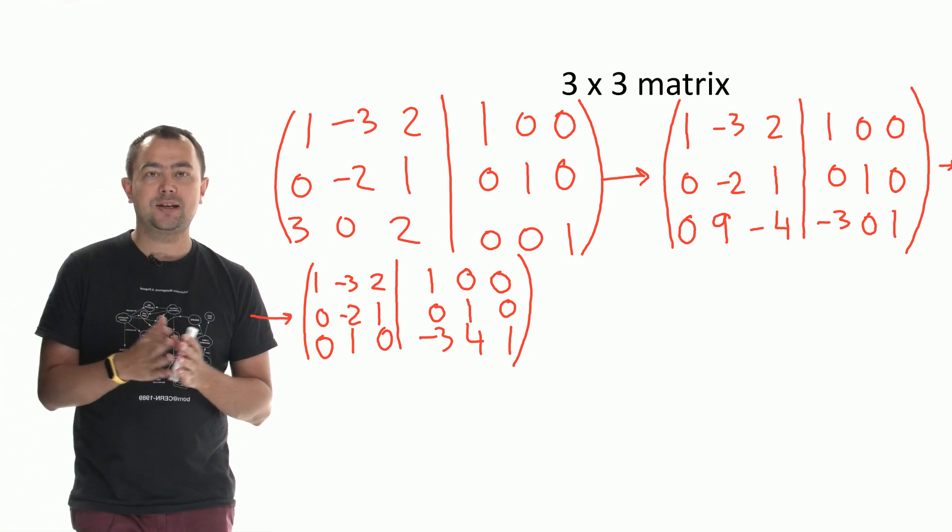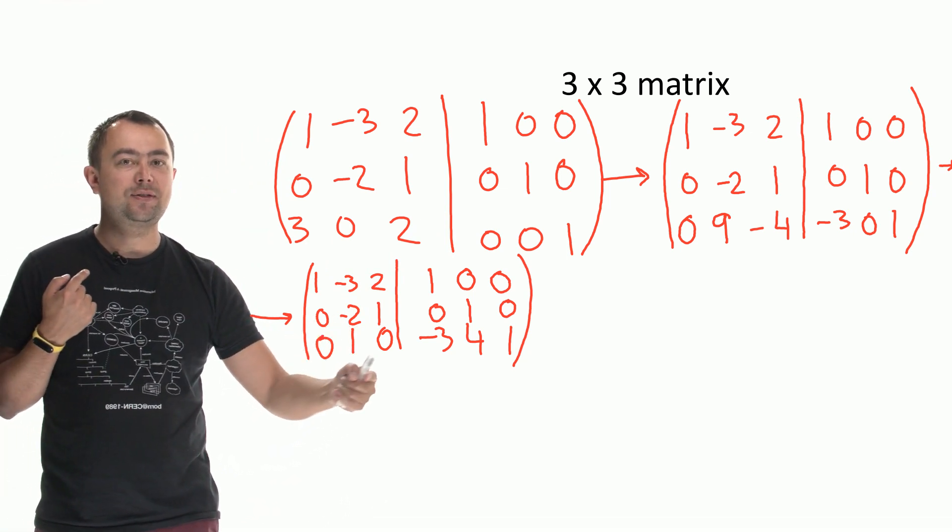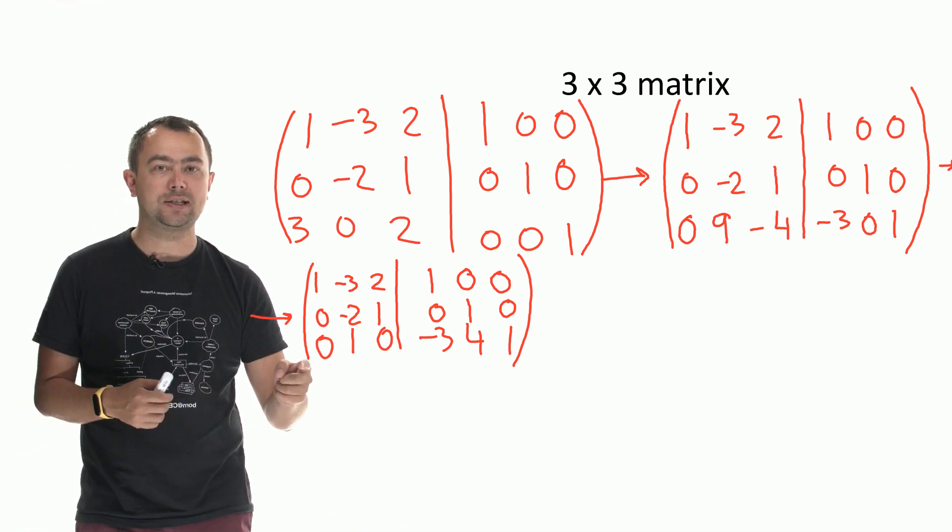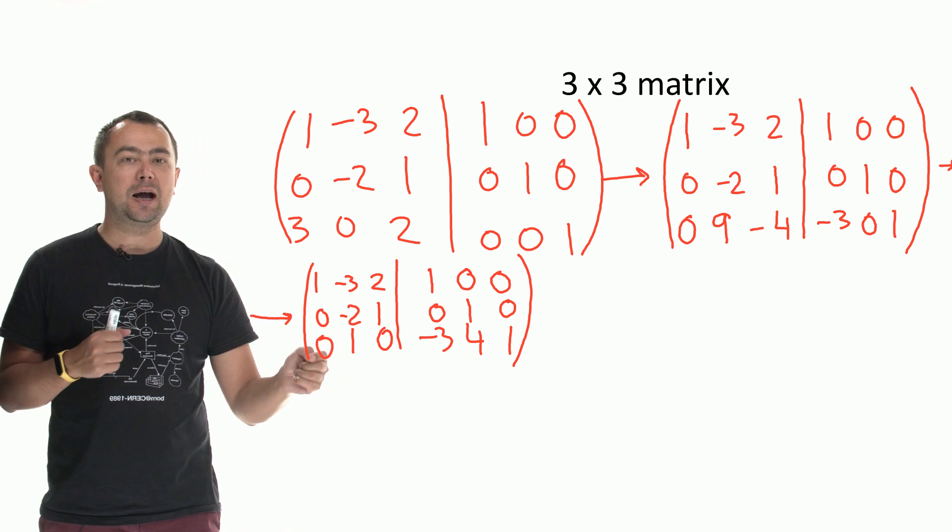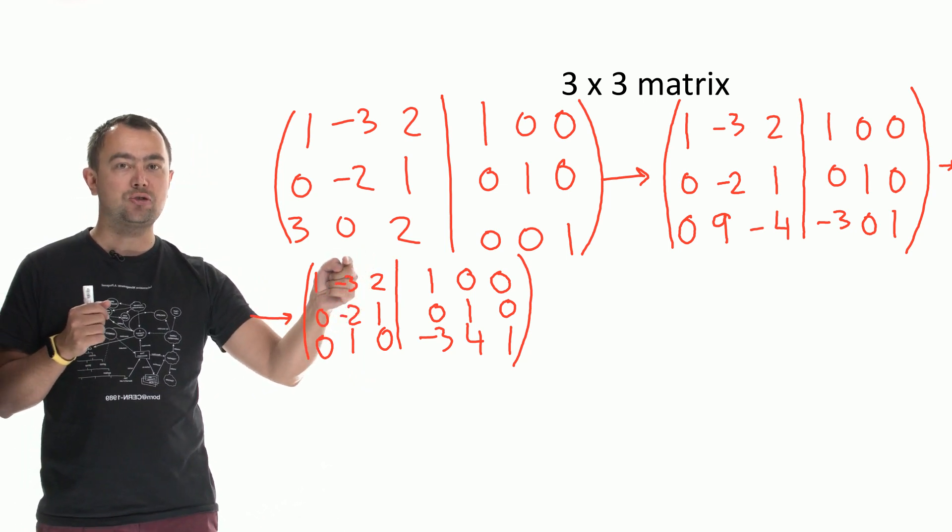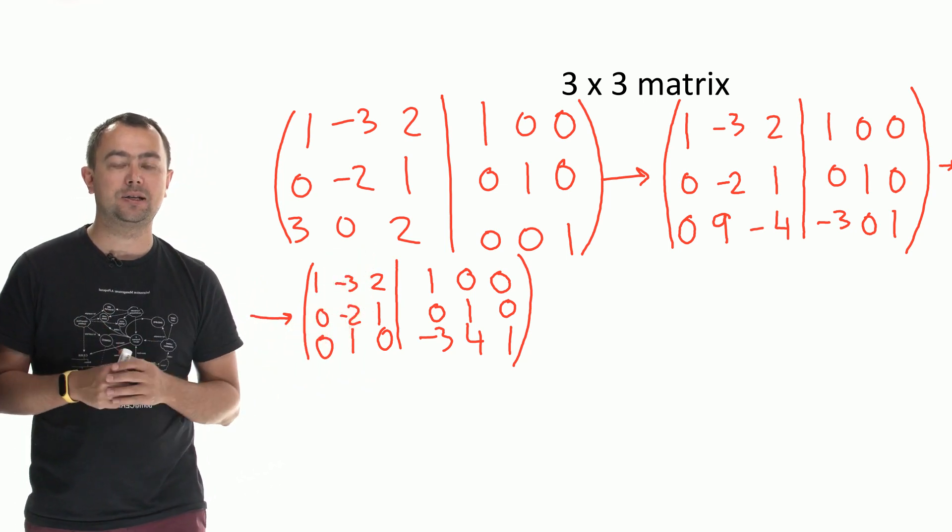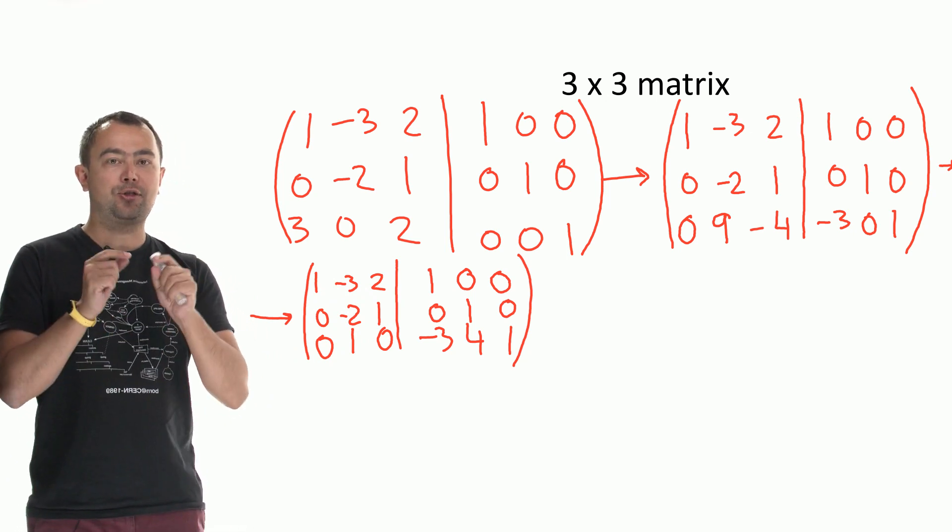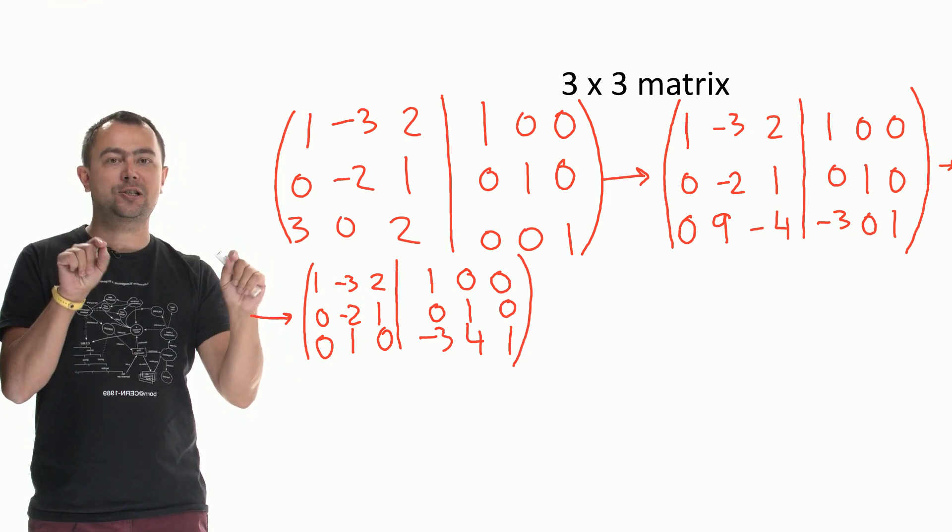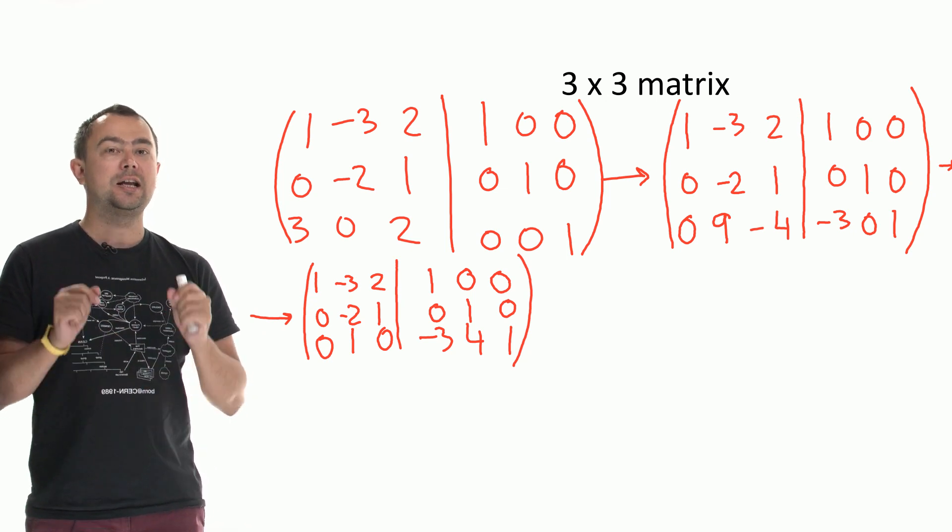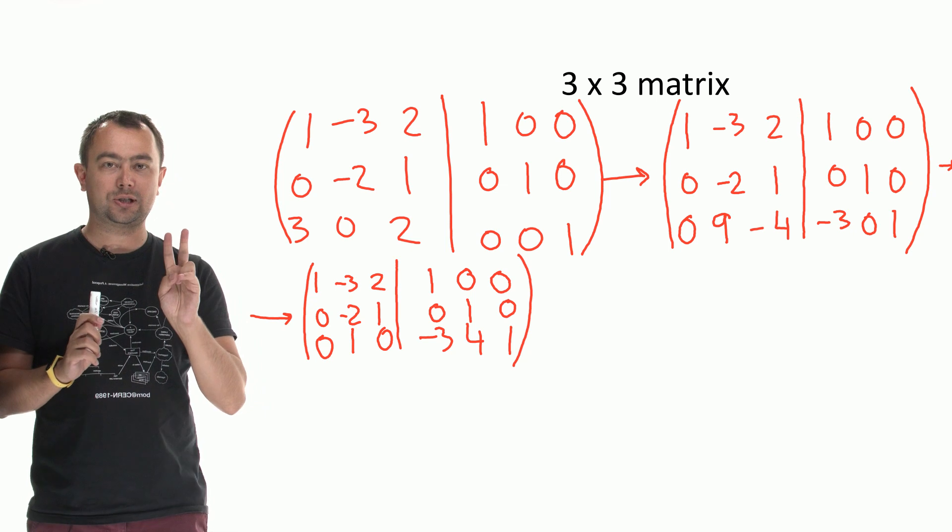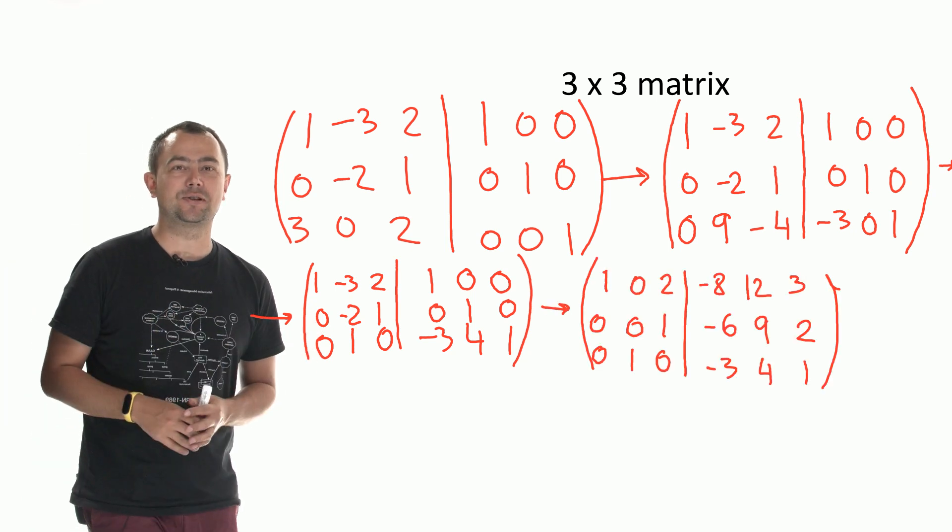The next thing I want to do is because I can see now that I have the row of the identity matrix, the third row, I'm going to use that to get rid of the minus 3 and the minus 2. To do that, I'm going to add the third line to the first line three times. And I'm going to add the third line to the second line two times. And this is the result.